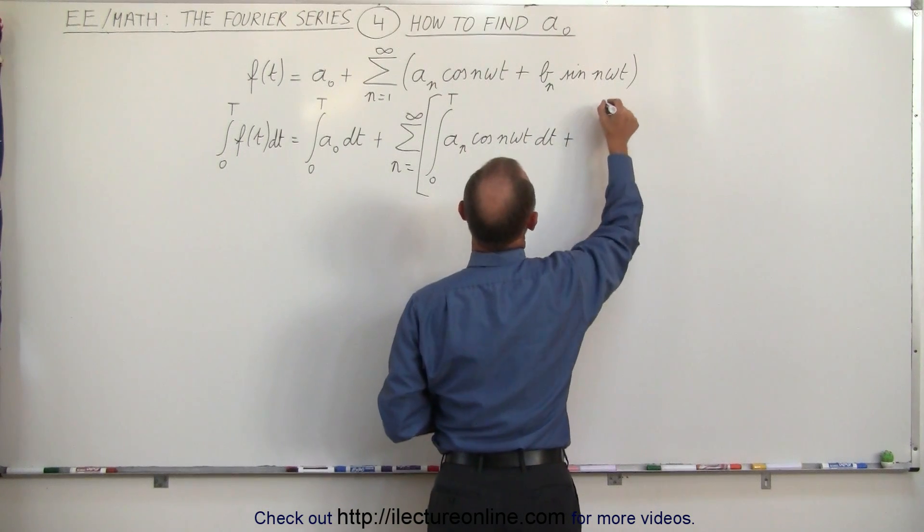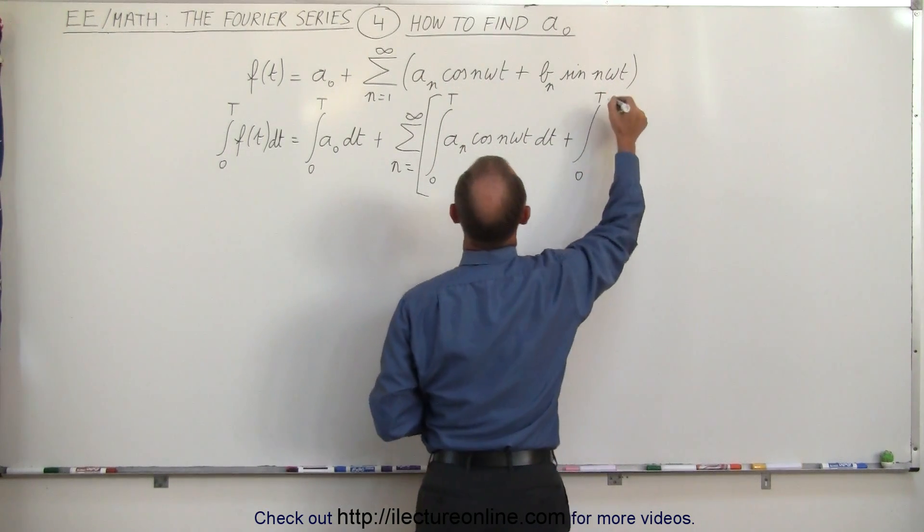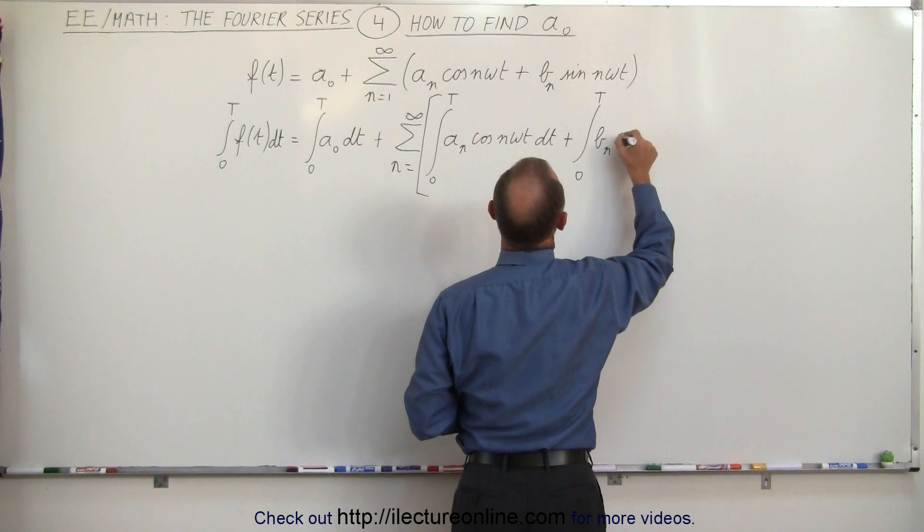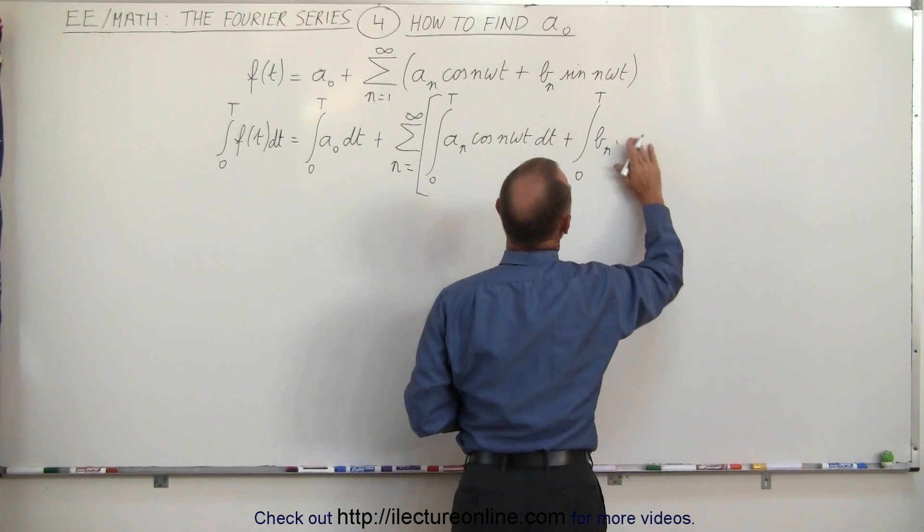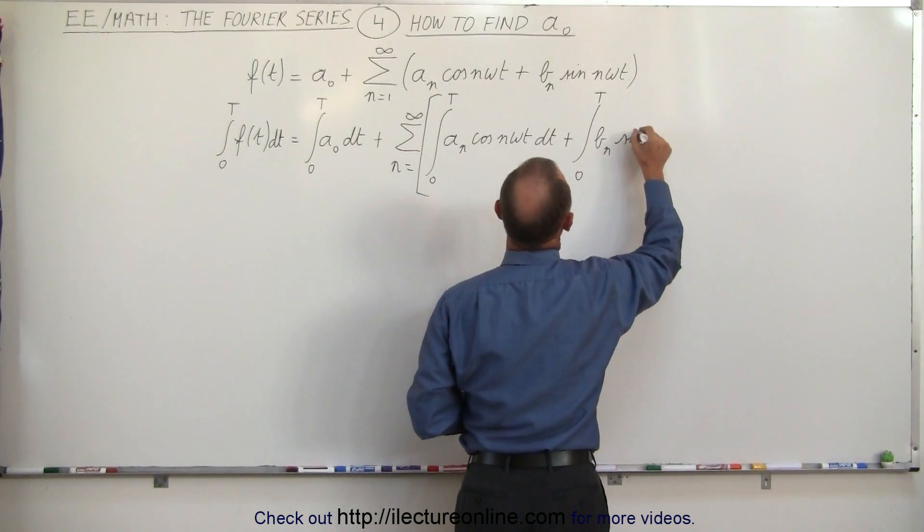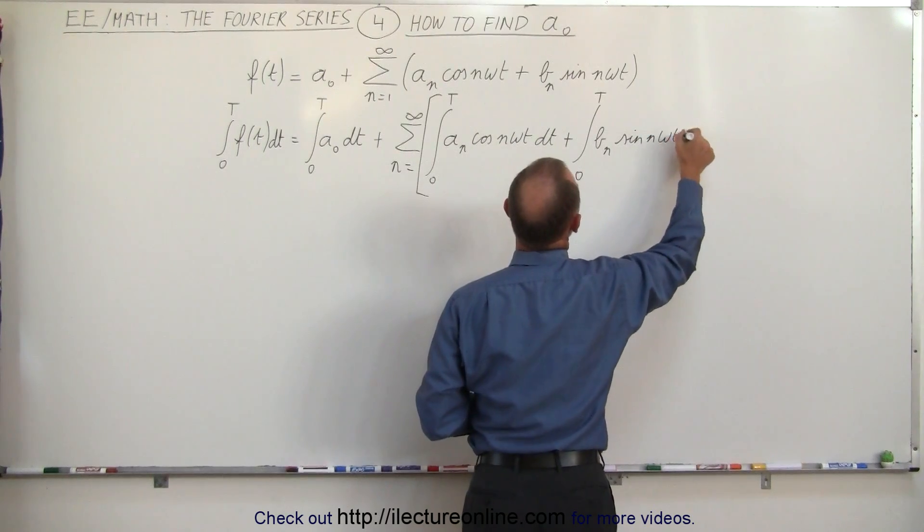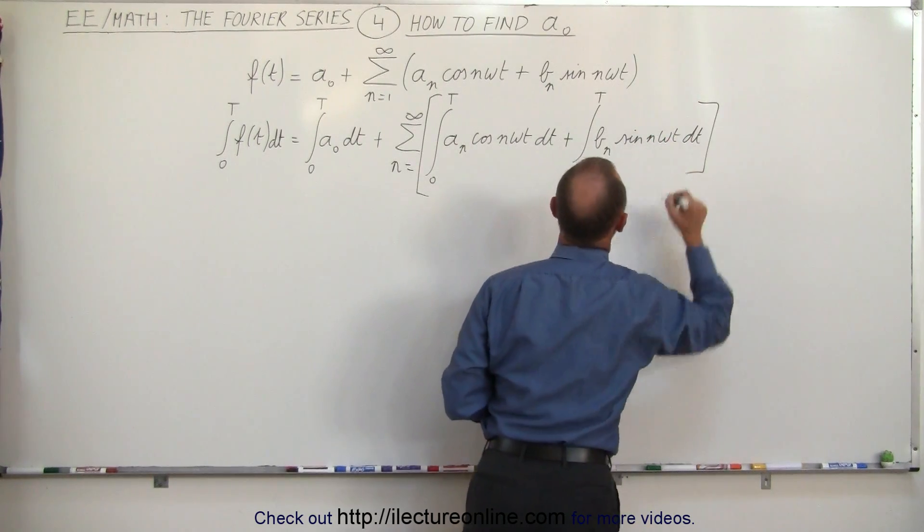Plus the sum from 0 to T of b sub-n times sine of n omega t dt.